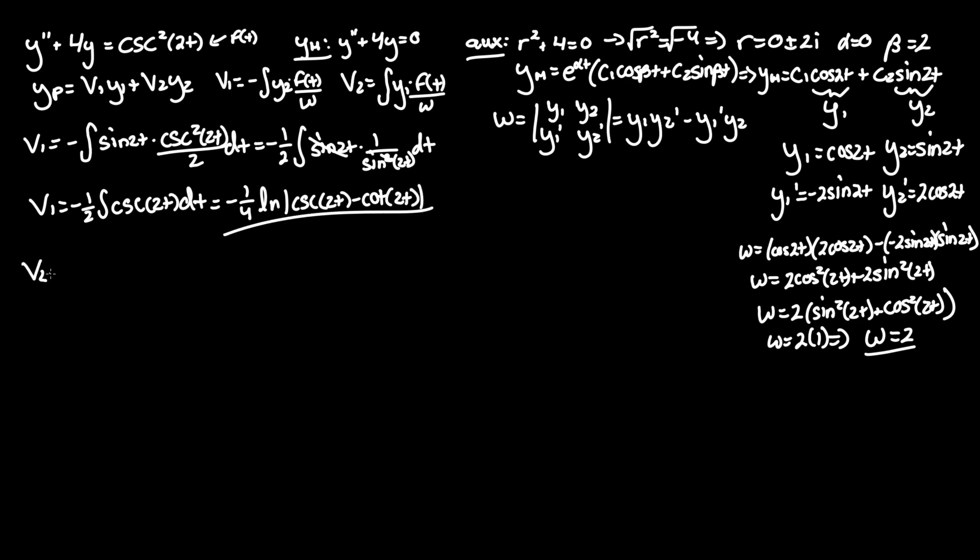Now for v2, that's equal to the positive integral of y1, which is cosine of 2t, times the same f of t as before, cosecant squared of 2t, over Wronskian, which is 2 dt. And that equals 1 half integral of cotangent, since we're just bringing one denominator underneath this cosine term of 2t, and we're still left with a cosecant term.